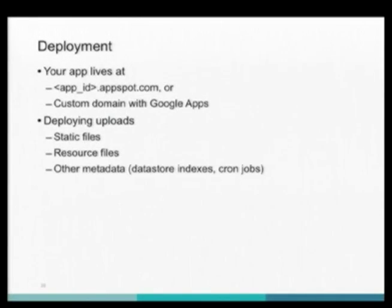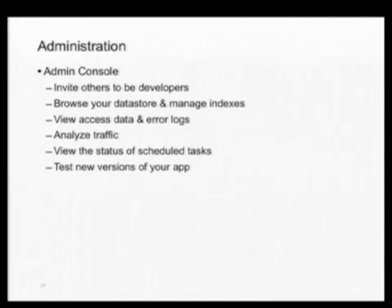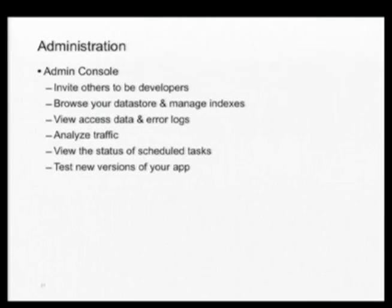Those public URLs are masked from ever hitting your application. There's also an administration console where you can invite other developers with a Google account, and any of you can deploy new versions. From the admin console you can browse the datastore, manage indexes, look at error logs, see how long each page takes to load, analyze traffic, look at stats, schedule tasks, and roll out new versions. You can test an application before deploying it, then use the admin console to make that version live — and roll back if needed.